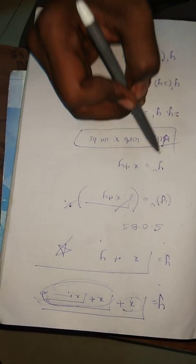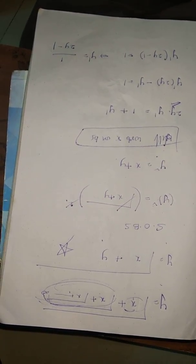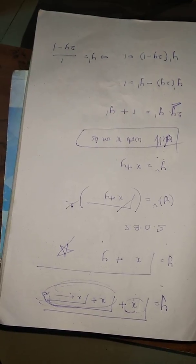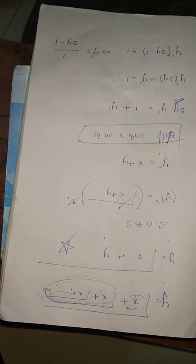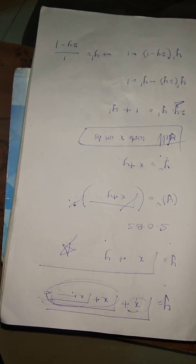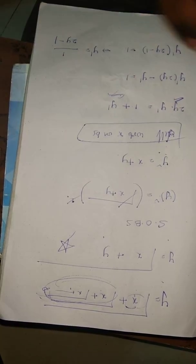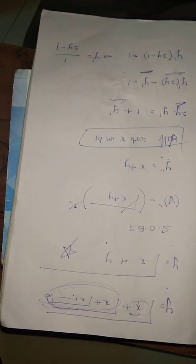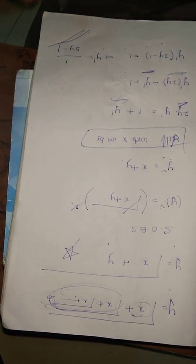Differentiating y² = x + y with respect to x: 2y·y' = 1 + y'. So 2y·y' − y' = 1. Factoring: y'(2y − 1) = 1.